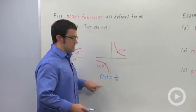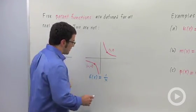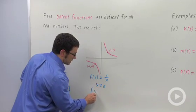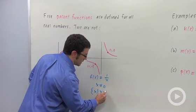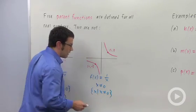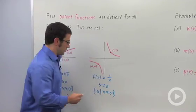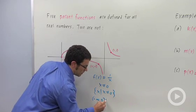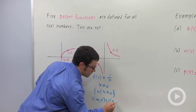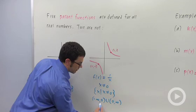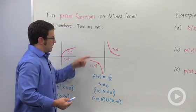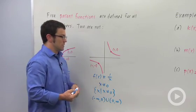The reciprocal function is defined for all real numbers except x equals 0. In set notation, we'd say all x such that x doesn't equal 0. Or, it's a little more cumbersome in interval notation, but you'd say negative infinity to 0 union 0 to infinity. So the negative numbers or the positive numbers. This would be the domain of our reciprocal function.